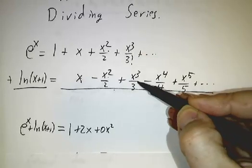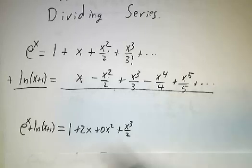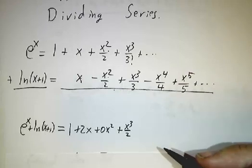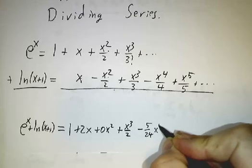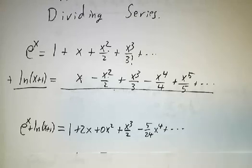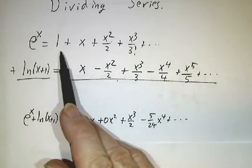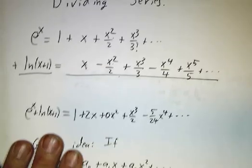1 sixth x cubed plus 1 third x cubed gives us 1 half x cubed. 1 twenty-fourth x to the fourth minus 1 fourth x to the fourth gives us minus 5 twenty-fourths x to the fourth and so on. To figure out the coefficient of the sum, you just take the nth coefficient of the first guy and add it to the nth coefficient of the second guy.